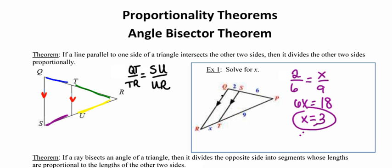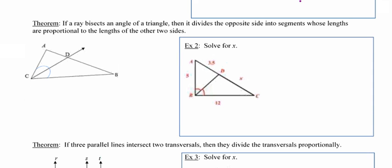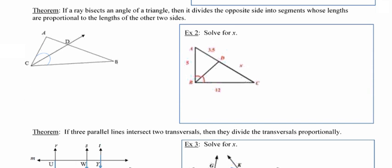So that's the first theorem that you need to be aware of. The second one has to do with what happens when a ray bisects an angle in a triangle. It says that when a ray bisects an angle of the triangle, then it divides the opposite side into two segments whose lengths are in proportion to the lengths of the other two sides.